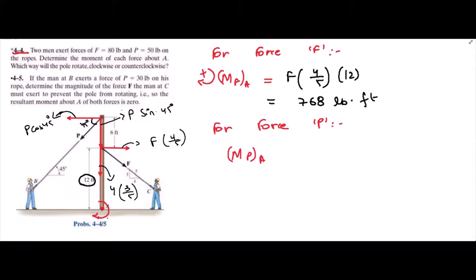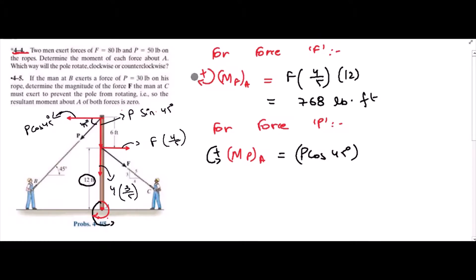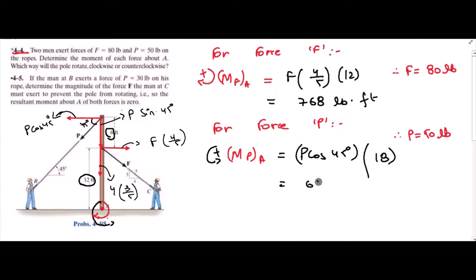For the moment of force P about point A — force P is trying to rotate the pole counterclockwise, so I am taking counterclockwise as positive. The vertical component passes through the pivot point, so it has no moment arm, but the horizontal component has a moment arm. We have P·cos45 degrees. F is given as 80 lb and P is 50 lb. The moment arm is 6 plus 12, which is 18 feet. So our answer is 636 lb·ft.